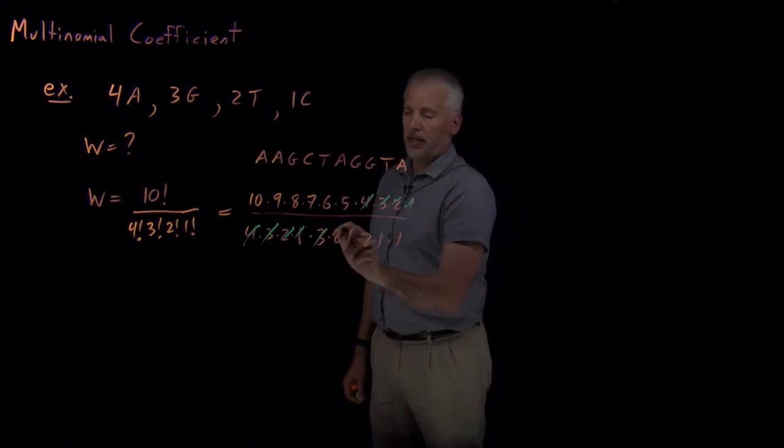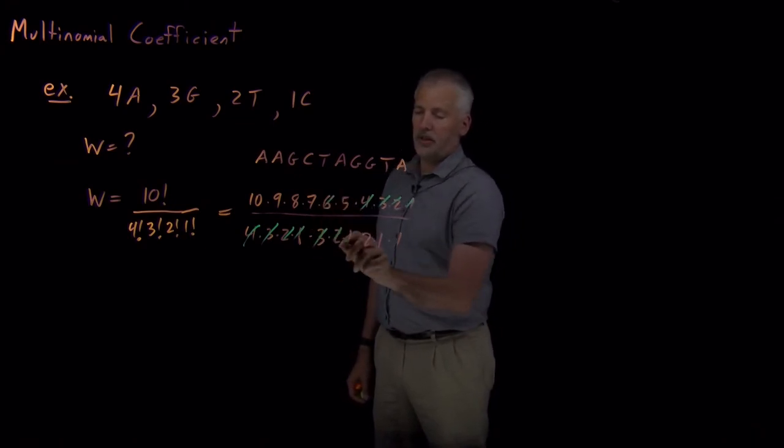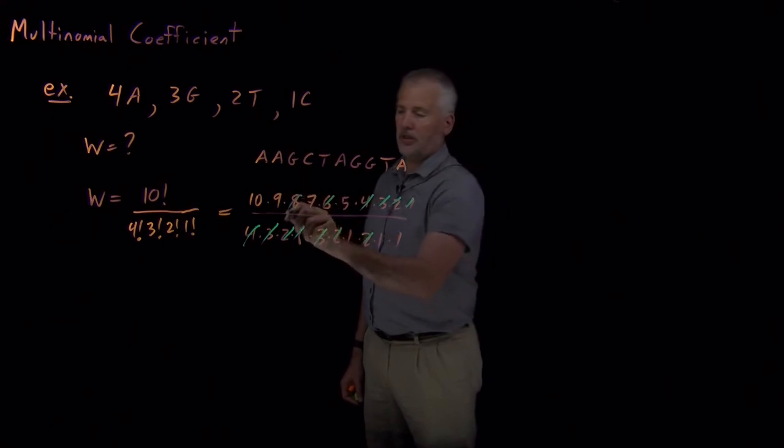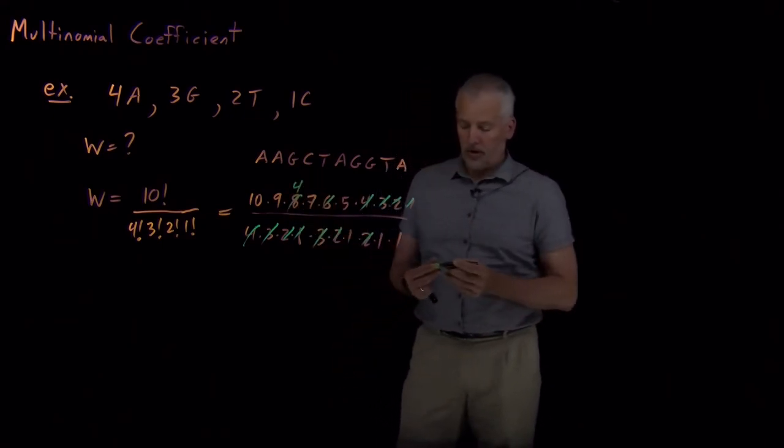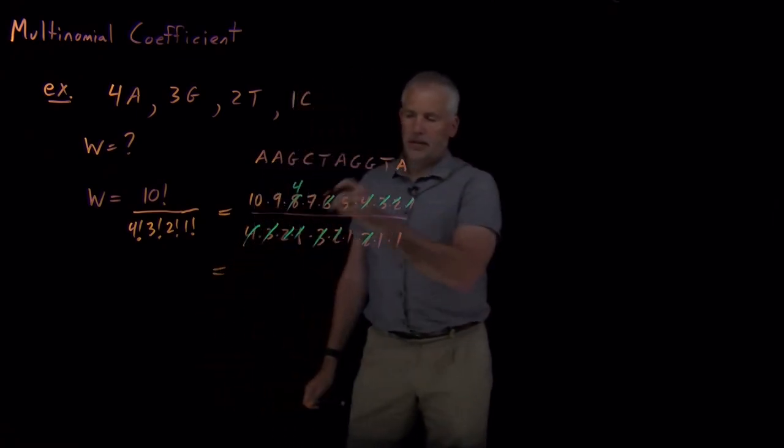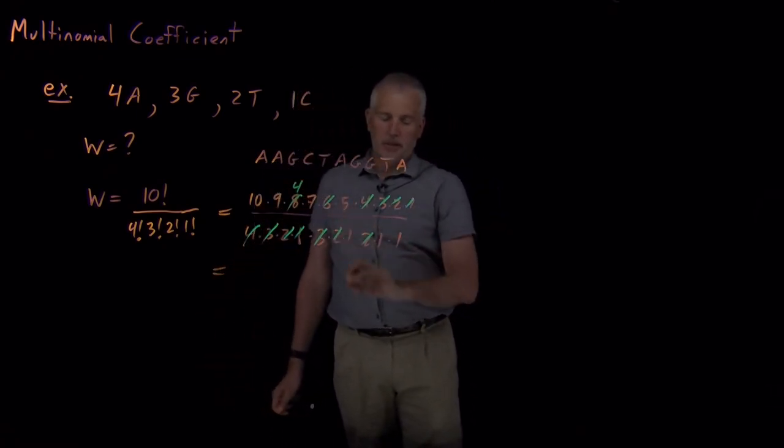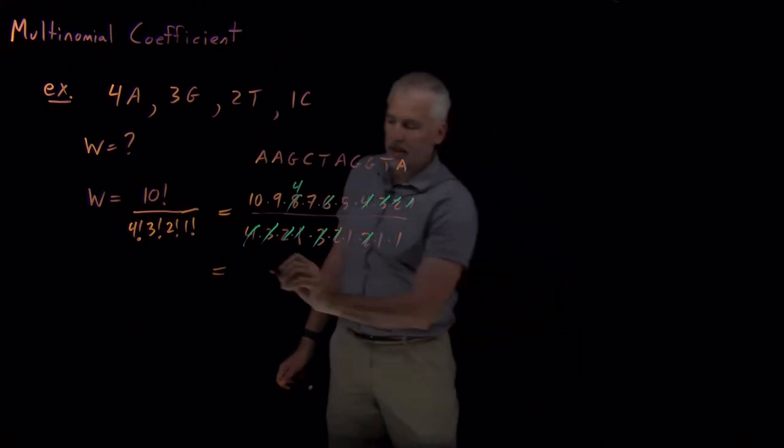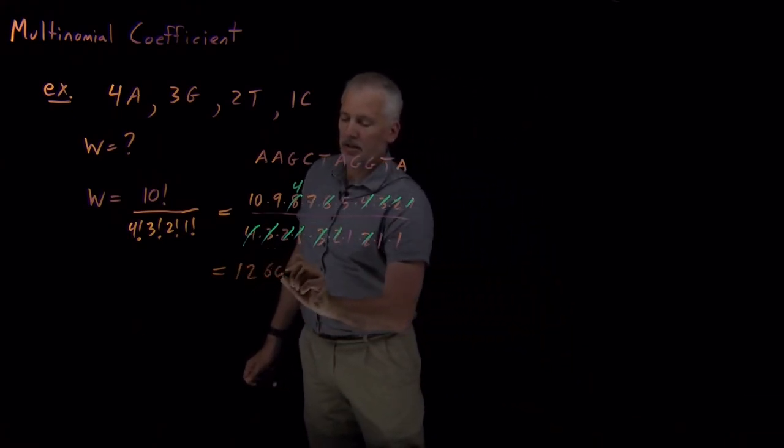If we were to do it by hand, the 6's kill, 3 and 2 kill 6, and the 2 knocks this down to a 4. If I multiply those out, 10 times 9 times 4 times 7 times 5, that will come out to be 12,600.